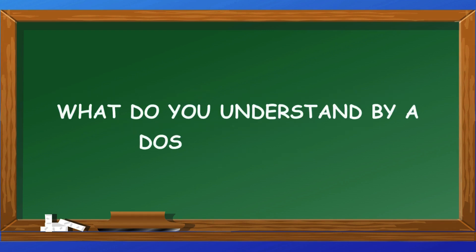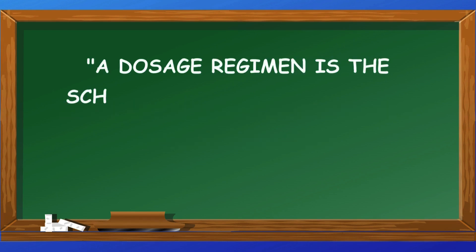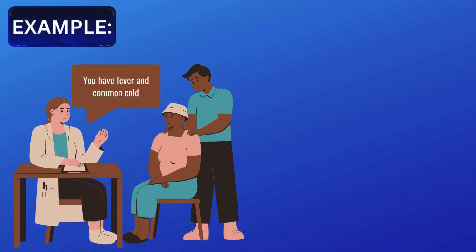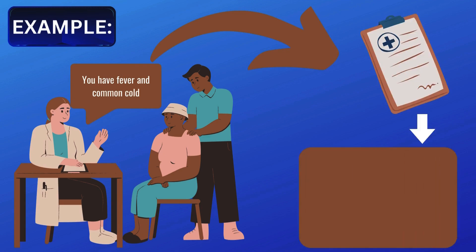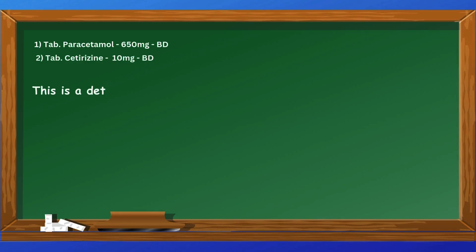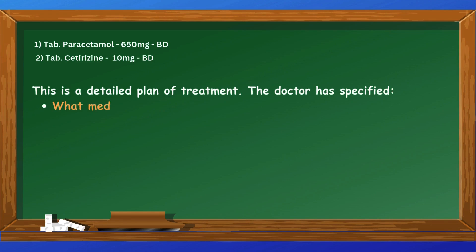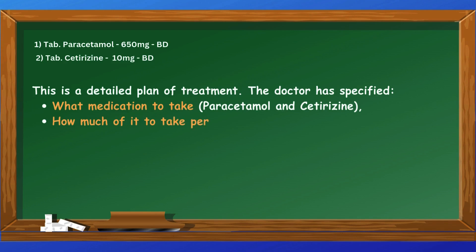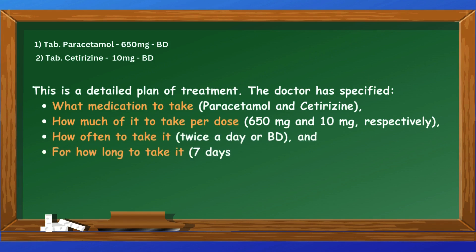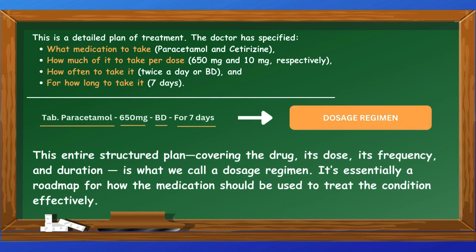Let's start with a simple question: what do you understand by a dosage regimen? A dosage regimen is the schedule of doses of a drug that a patient needs to take to achieve a therapeutic effect. For example, suppose a patient has fever and a common cold. The doctor prescribes tablet paracetamol 650mg twice a day (BD) for 7 days, and tablet cetirizine 10mg twice a day (BD) for 7 days. This is a detailed plan specifying what medication to take, how much per dose, how often, and for how long. This entire structured plan — the drug, its dose, its frequency, and duration — is what we call a dosage regimen. It's essentially a roadmap for how the medication should be used to treat the condition effectively.